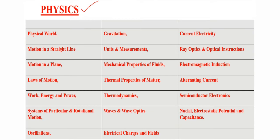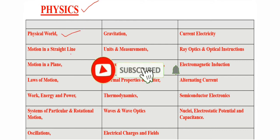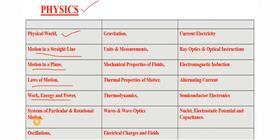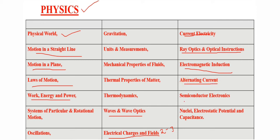The next subject to consider is Physics. Important physics subtopics include: physical world, motion in a straight line, laws of motion, work energy and power, system of particles, rotational motion, gravitation, units, mechanical properties of fluids, waves and wave optics — which carry 2 to 3 marks — current electricity, ray optics, electromagnetic induction, alternating current, and semiconductors including P-N junctions and diodes, nuclear physics, electrostatic potential, and capacitance.